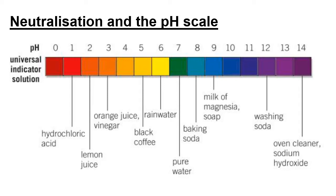Acid rain is quite a weak acid. As we move past pH 7, we've got our weak alkalis like baking soda, but as we move up the scale, we have stronger alkalis — things like oven cleaner, bleach, etc.